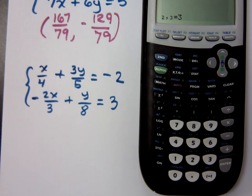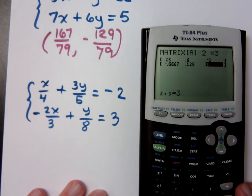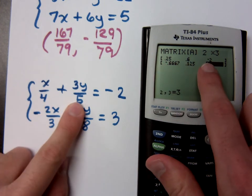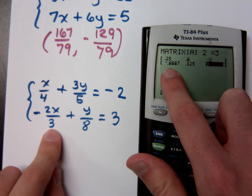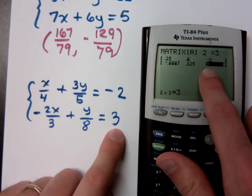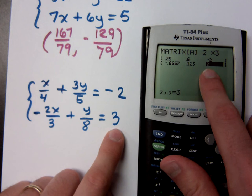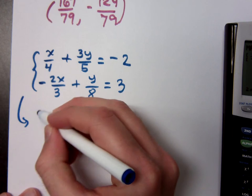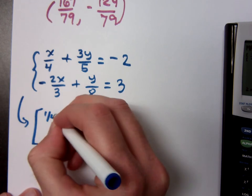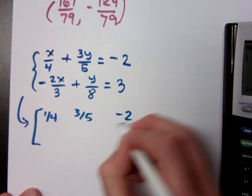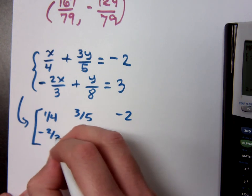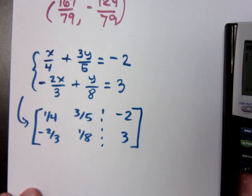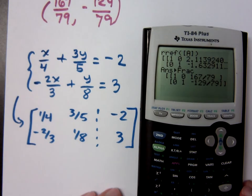Is everybody with me? Whoops. Sorry about that. Is everybody with me on how I typed all this in? This is 1 fourth, that's 3 fifths, and that's negative 2. This is negative 2 thirds, 1 eighth, and 3. So this guy, as a matrix, let me just write this again for you. 1 fourth, 3 fifths, negative 2, negative 2 thirds, 1 eighth, and 3. Okay? Quit out of this guy.